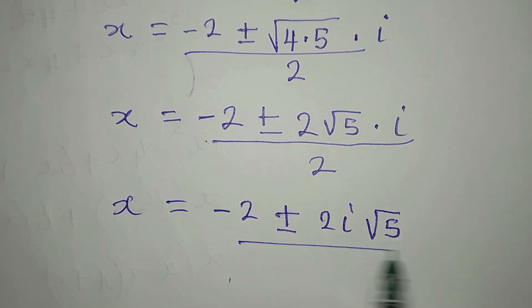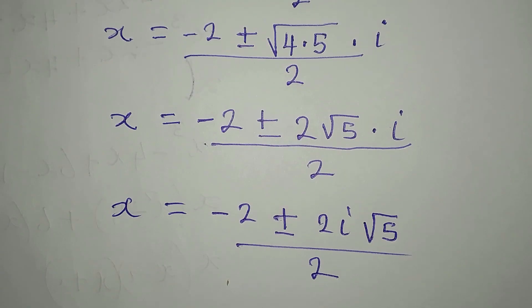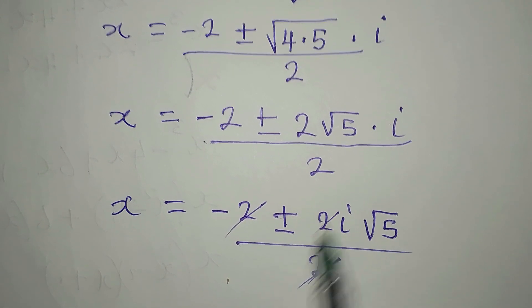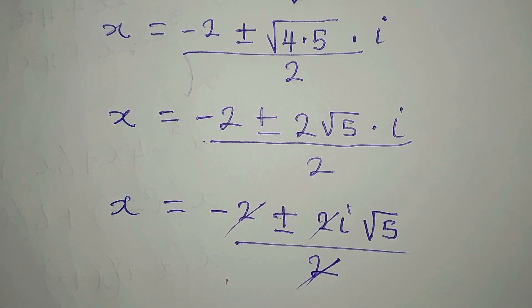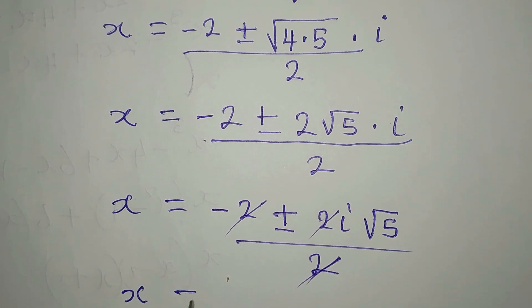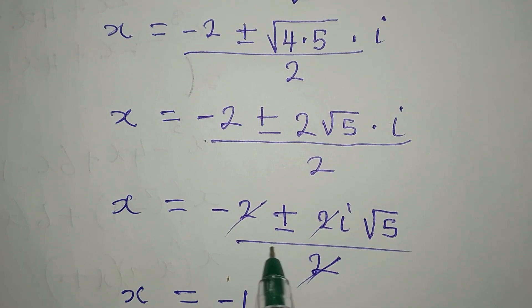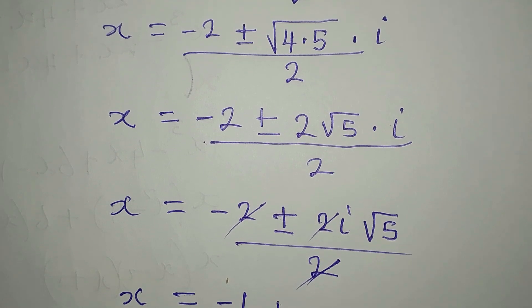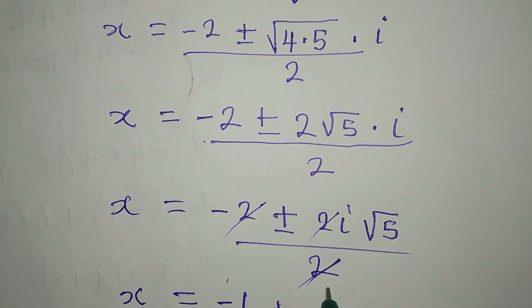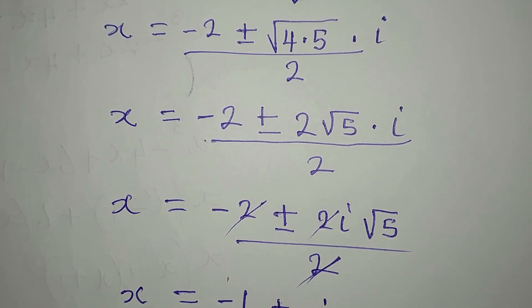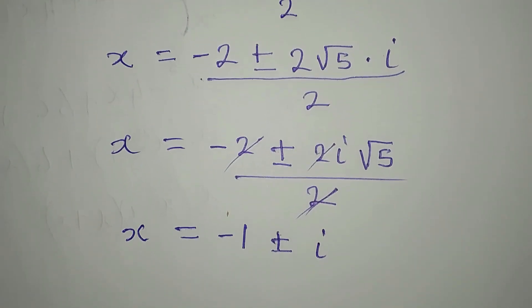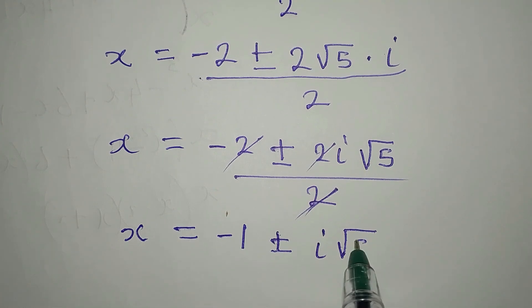Dividing through by 2: minus 2 divided by 2 is minus 1, and 2 divided by 2 is 1. So x equals minus 1 plus or minus i root 5.